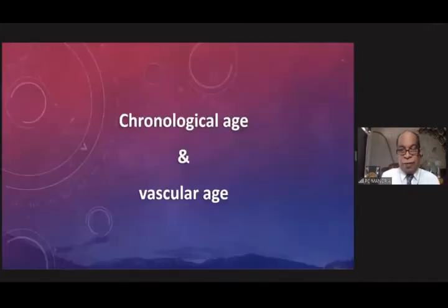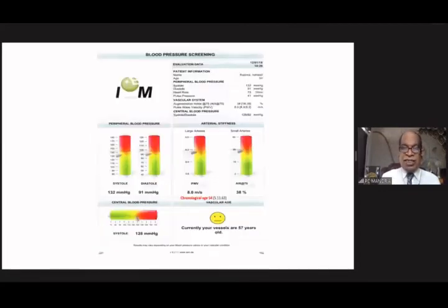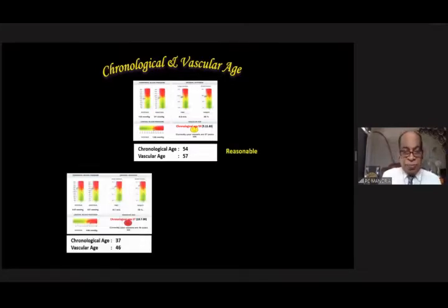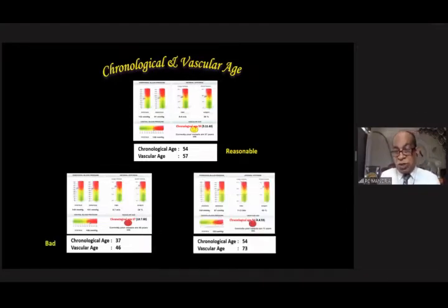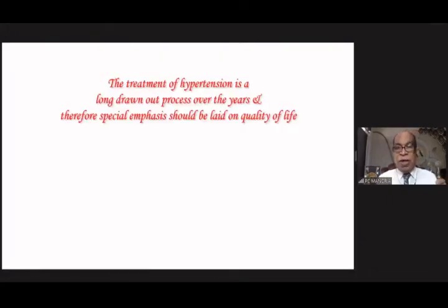Bringing diastolic blood pressure below 60 increases high-sensitivity troponin, though patients who have been revascularized tolerate lower diastolic pressure better. The other issue is chronological age versus vascular aging — hypertension is an important cause of premature vascular aging, and today we can calculate vascular age by simple non-invasive methods. A patient aged 54 may have a vascular age of 57 — acceptable — but a 37-year-old with vascular age of 46 is concerning. There is no real correlation between blood pressure numbers alone and vascular aging, as dyslipidemia and diabetes also play roles.